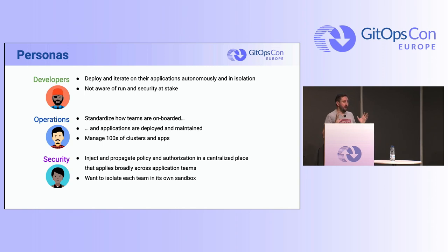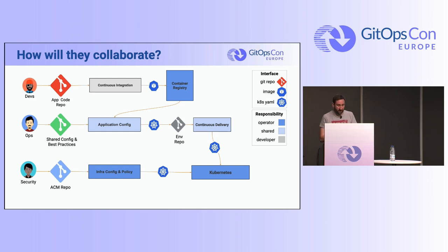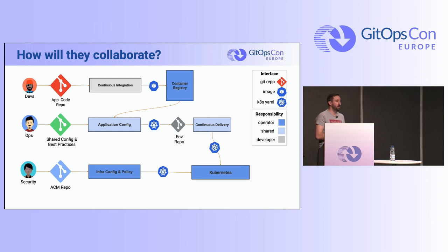Each team has their own focuses and mindsets. So how do they interact with each other? First, developers push code into the repo, continuous integration builds create images in the container registry, and then we deploy those images to the cluster. Then ops create best practices and shared configuration to scale to hundreds of clusters without any friction.